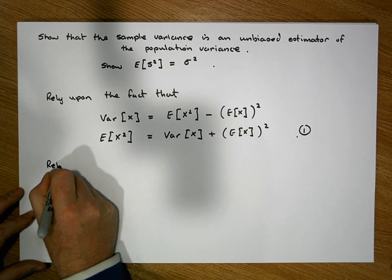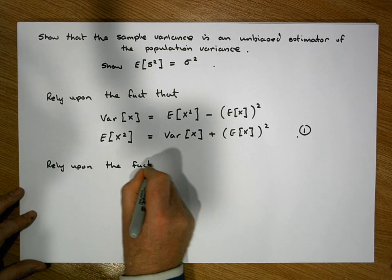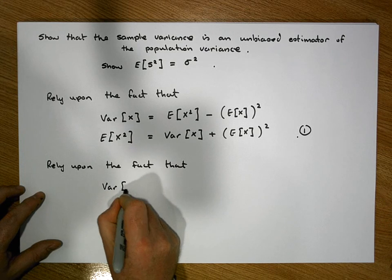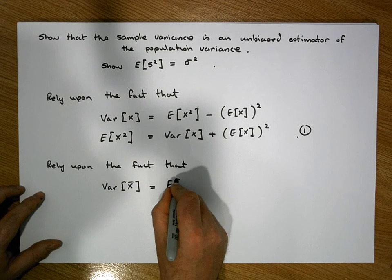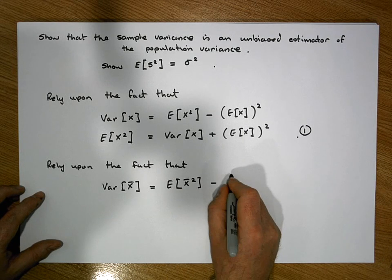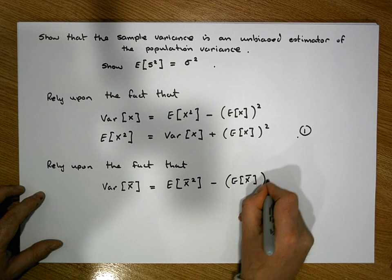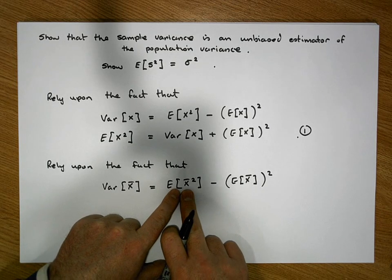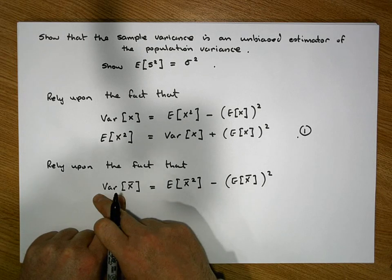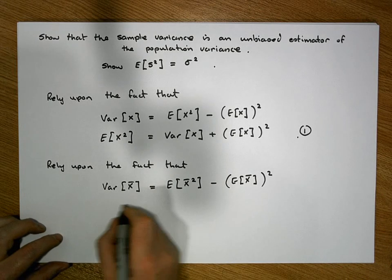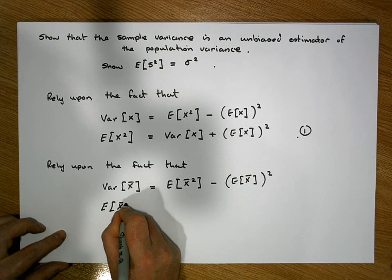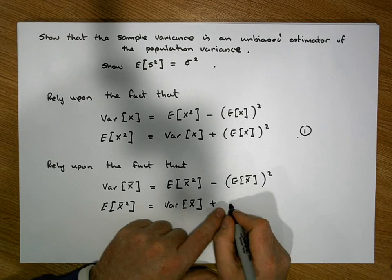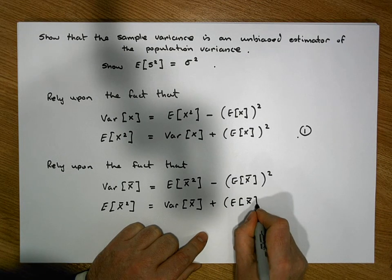We're also going to rely upon the fact that when the random variable is X-bar, the variance of the sampling distribution of X-bar equals the expected value of X-bar squared minus the expected value of X-bar, all squared. We're going to solve this for the expected value of X-bar squared, so the expected value of X-bar squared equals the variance of X-bar plus the square of the expectation of X-bar.